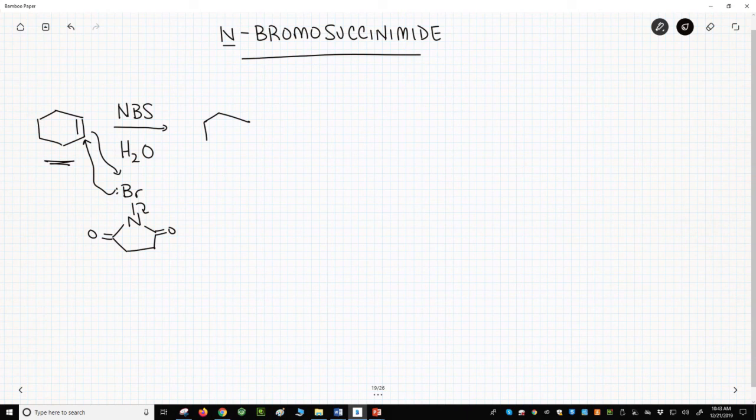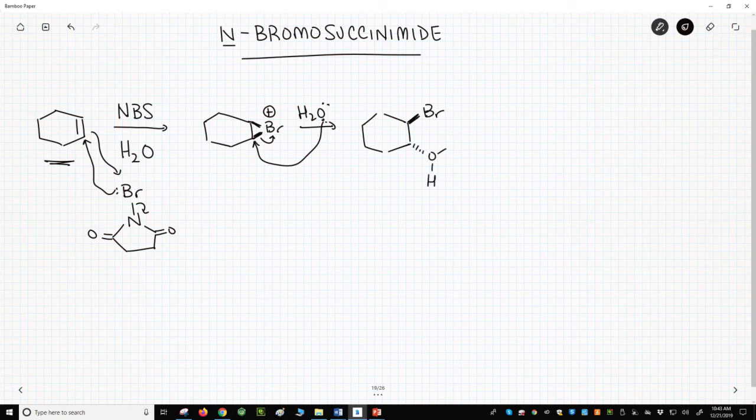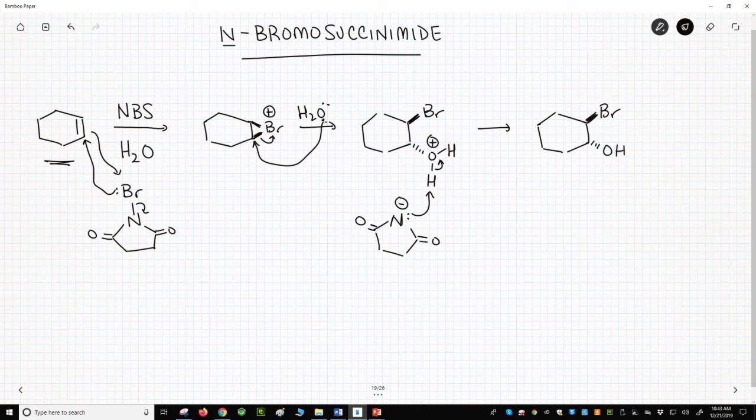So let's put the Br on the top face. The resulting bromonium ion is attacked and opened by our solvent, water. We now need a base to deprotonate the oxygen. I'm going to use the succinimide leaving group to do that deprotonation, and that gives us our bromohydrin, and we've avoided forming any strong acids. So here's what the succinimide... This is actually the succinimide molecule with the NH.